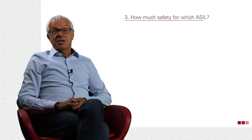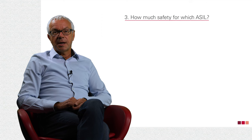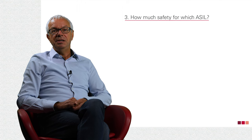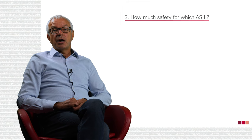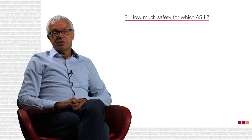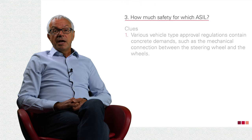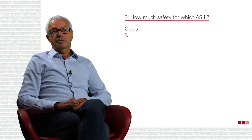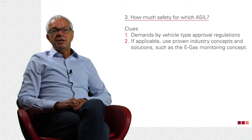Now the really interesting question: how do you know if you already have enough safety requirements for the ASIL? For example, are two separate sensors required? Do I need a second power supply for an actuator for a certain transition period? What criteria must messages meet between two control units? There are rarely standard answers to such questions. However, various vehicle type approval regulations contain concrete demands, such as the mechanical connection between the steering wheel and the wheels. If applicable, use proven industry concepts and solutions such as the e-gas monitoring concept.